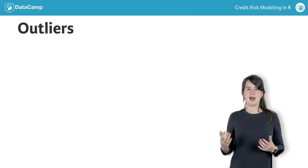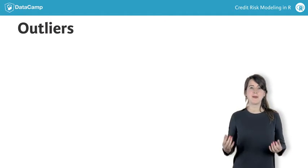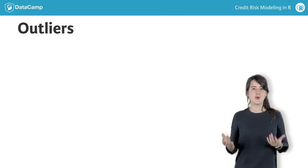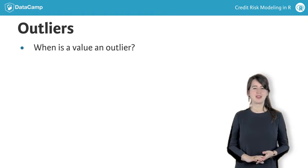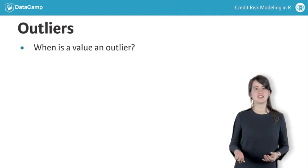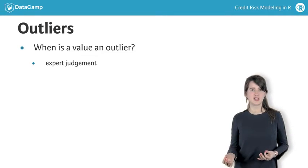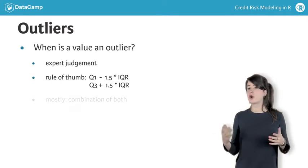In statistics, an outlier is an observation that is abnormally distant from other values. But when is a distance abnormal? In general, data scientists will use their expert judgment, rules of thumb, or a combination of both.